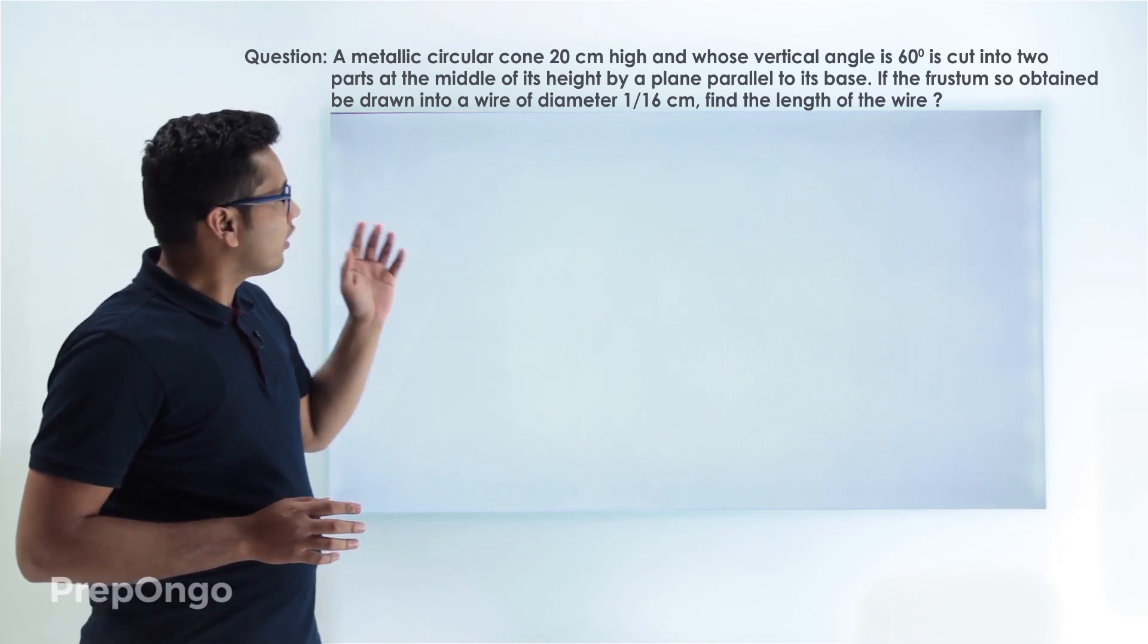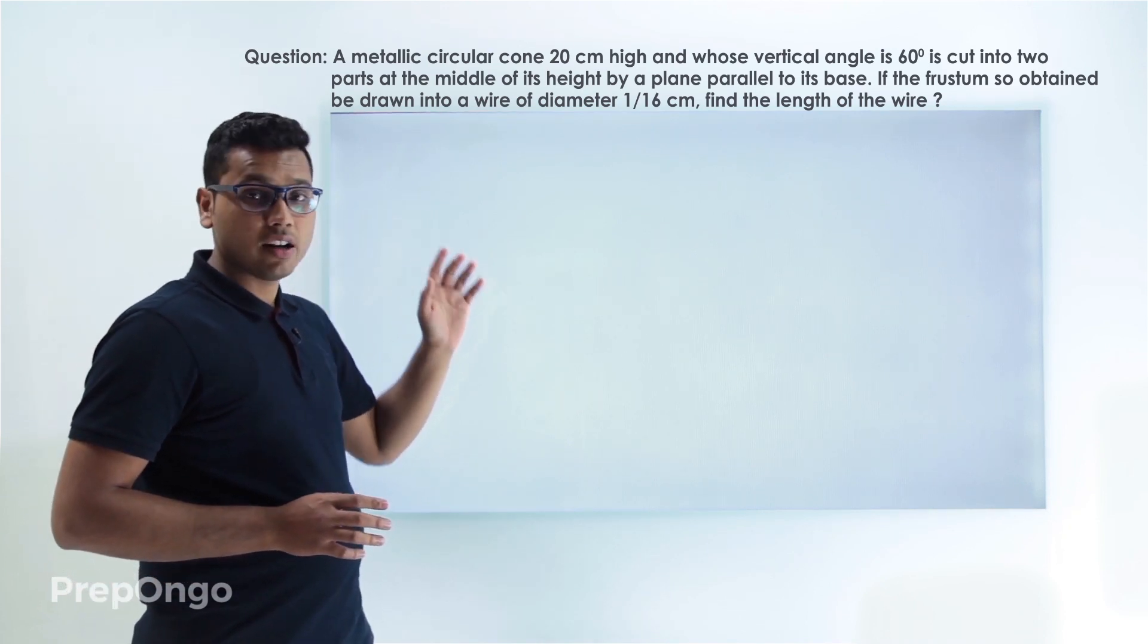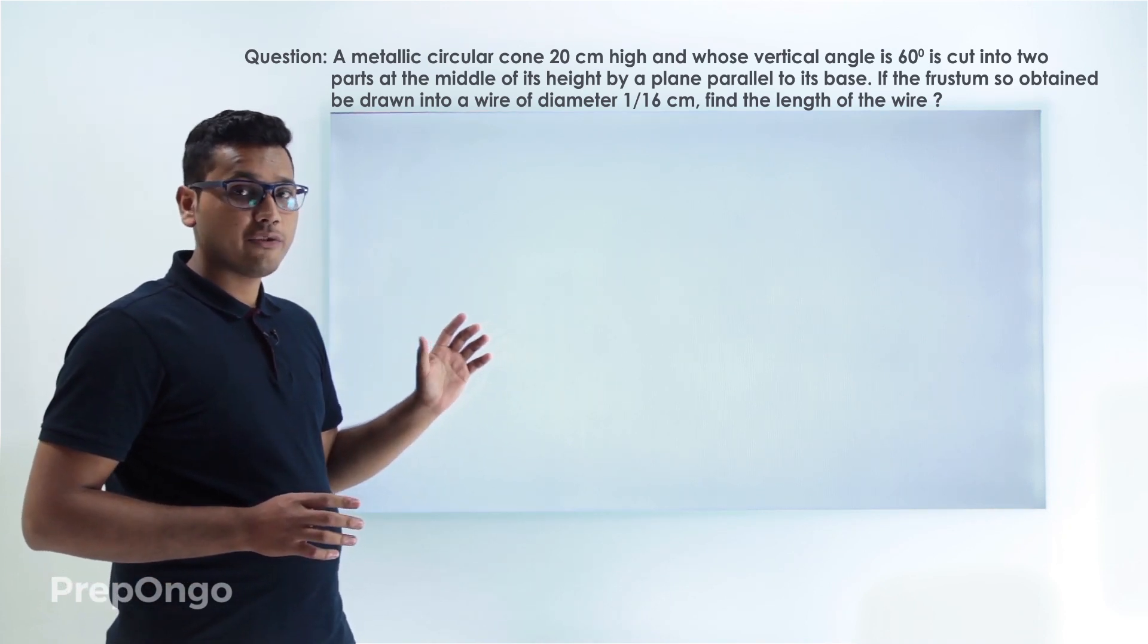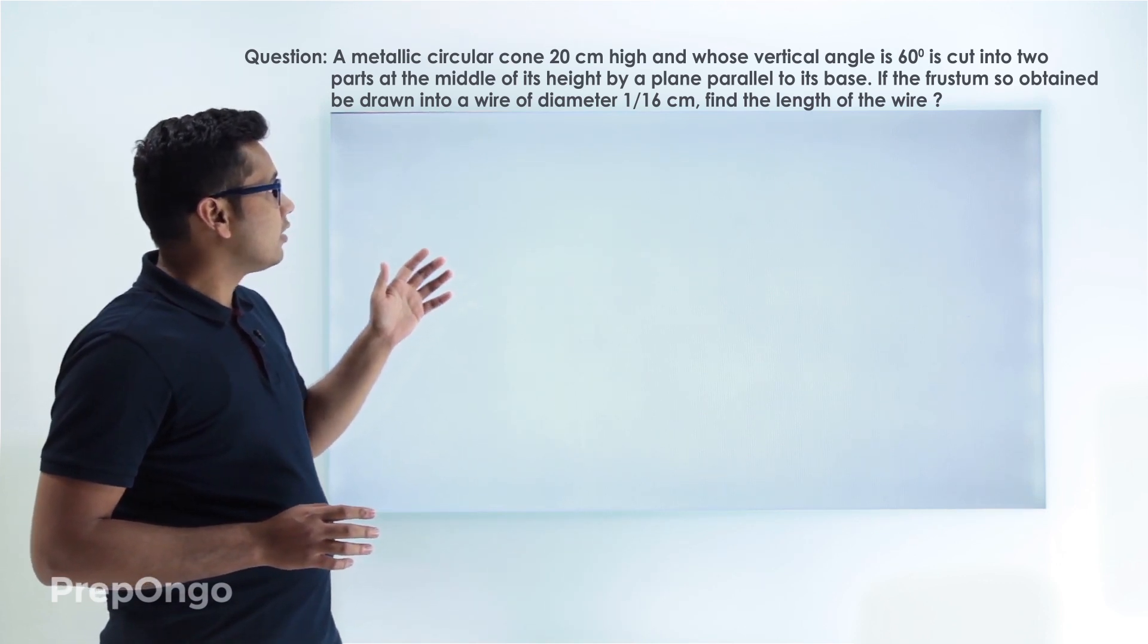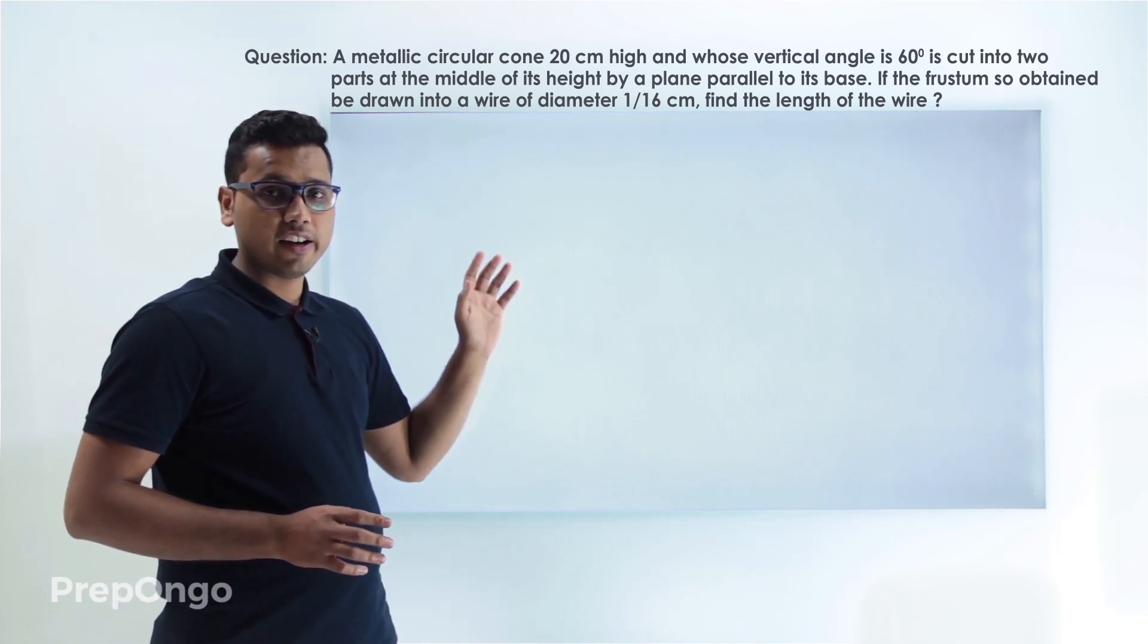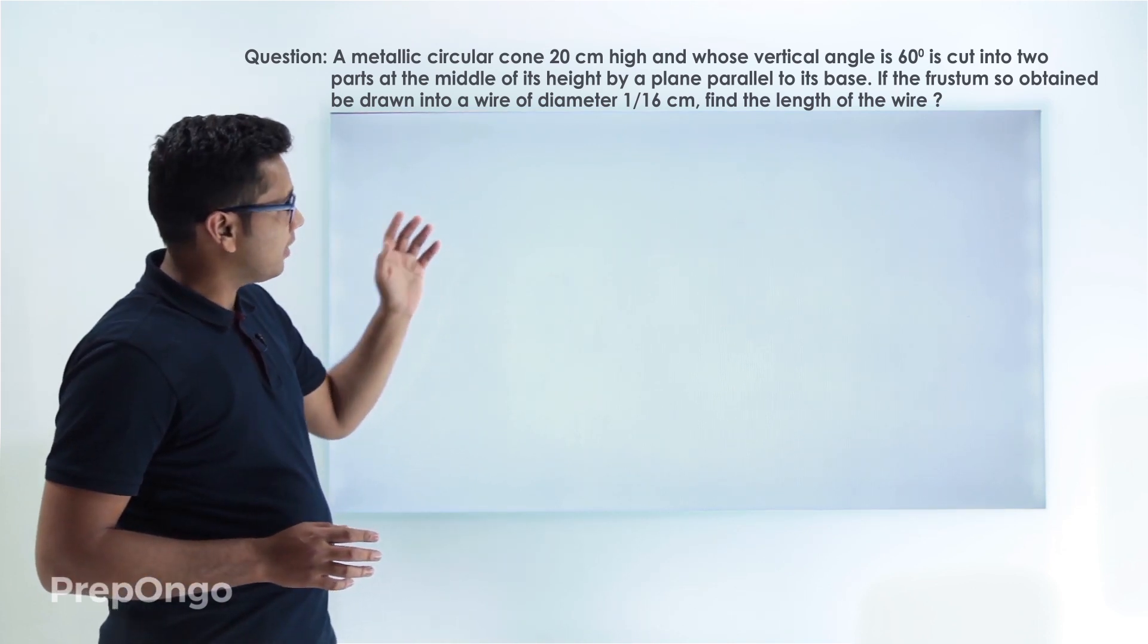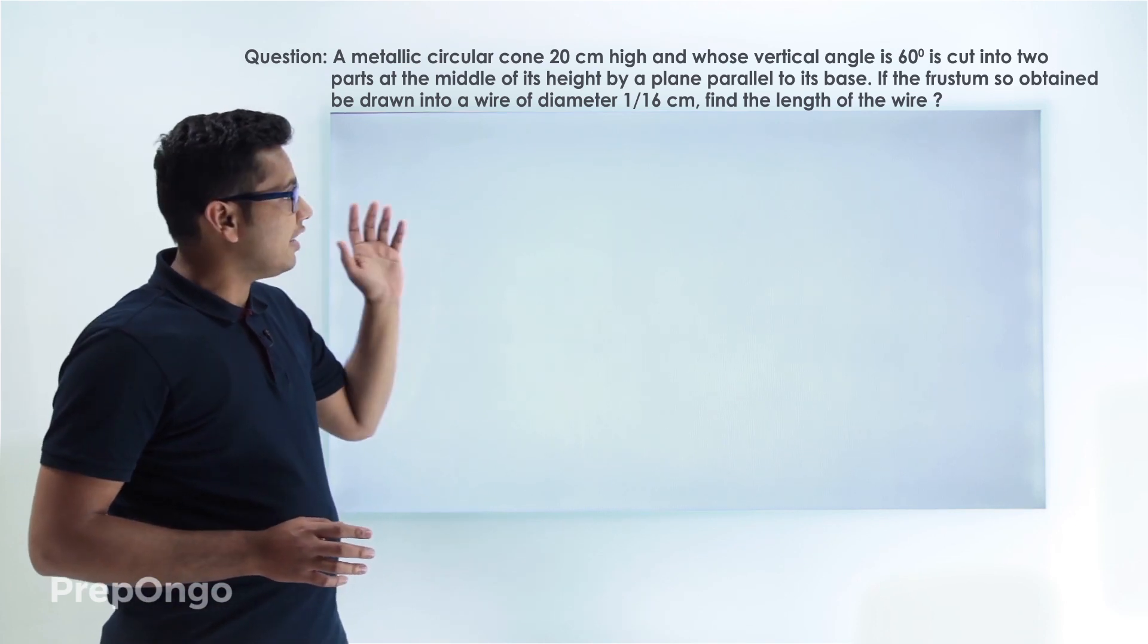This cone is cut in the middle of its height by a plane which is parallel to its base so that we obtain a frustum, and then we are said that this frustum is drawn into a wire whose diameter is 1 by 16 centimeter and we have to find the length of this wire.